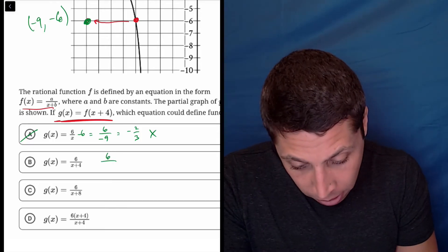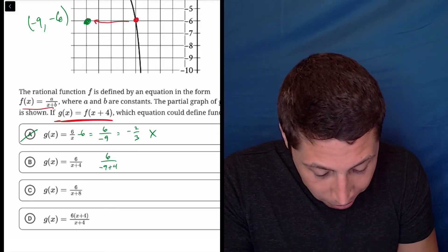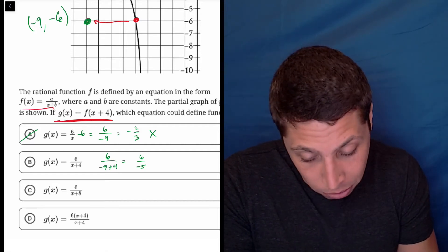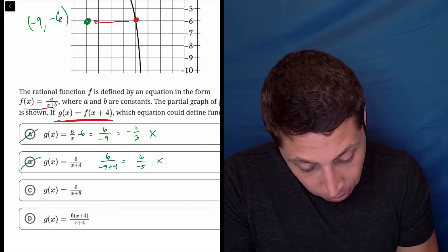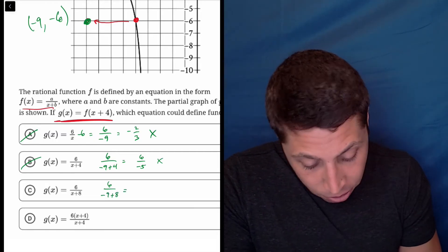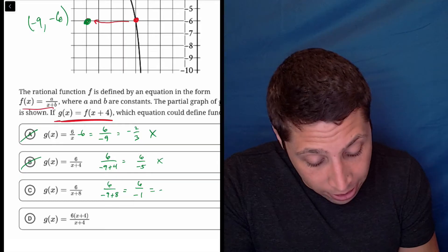Six over, this is negative nine plus four. So that's six over negative five. That's also not negative six. That's wrong. This is six over negative nine plus eight. So six over negative one, that's negative six.